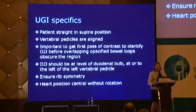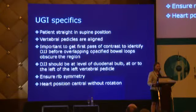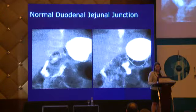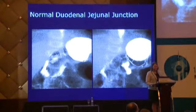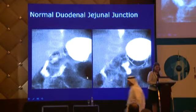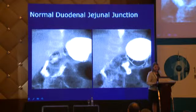For an upper GI, the patient must be straight with vertebral pedicles aligned, and it's important to get the first pass of contrast through the duodenum before overlapping loops obscure what's going on. You should look for the duodenal-jejunal junction to be at the level of the duodenal bulb to the left of the vertebral pedicle, and make sure the ribs are symmetric. Here we see the normal duodenal-jejunal junction — the DJ flexure is at the same level as the duodenal cap, with proximal jejunal loops extending in the appropriate direction.